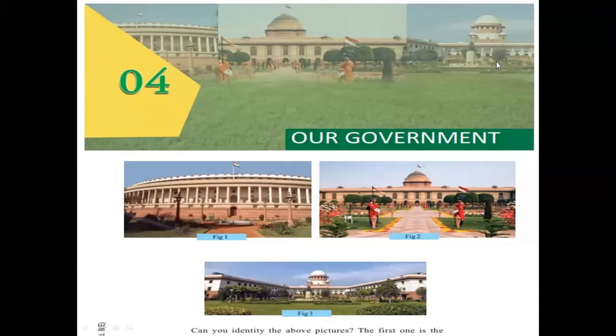Very good. And then the next picture — what is the next picture? Can you see the garden? That is the Mughal Garden. That is the Rashtrapati Bhavan. And what is the third picture? That is the Supreme Court. So the first one is the Parliament, the second picture is the Rashtrapati Bhavan, and the third picture is the Supreme Court.